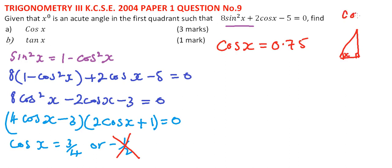Cosine x equals the adjacent side over the hypotenuse, so the adjacent side is 3 and the hypotenuse is 4. To get the opposite side, we call it h.